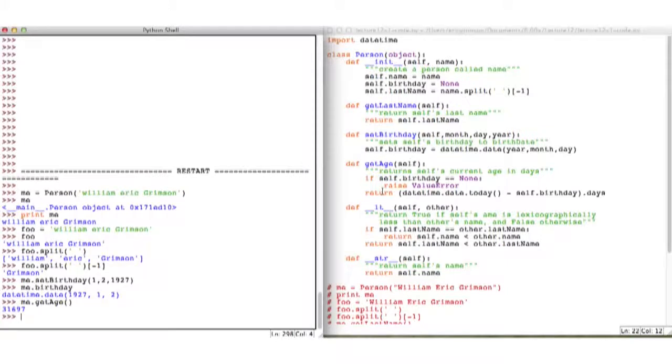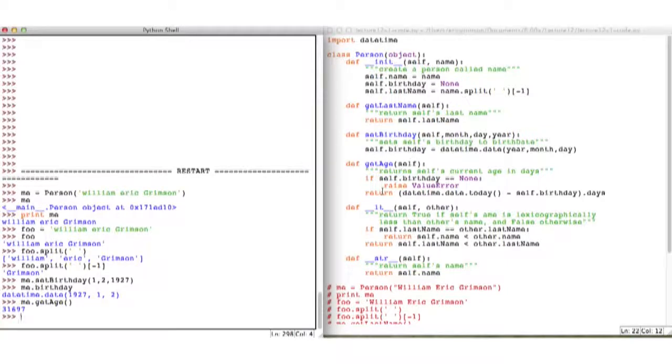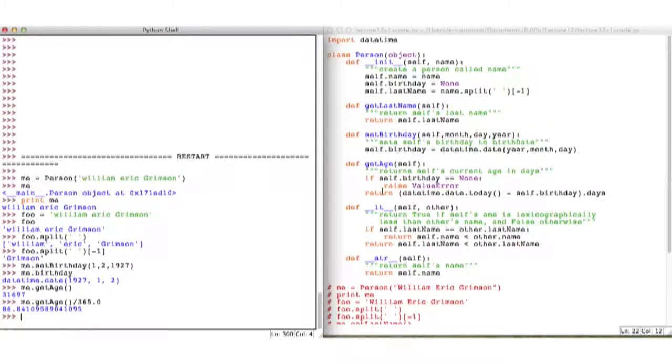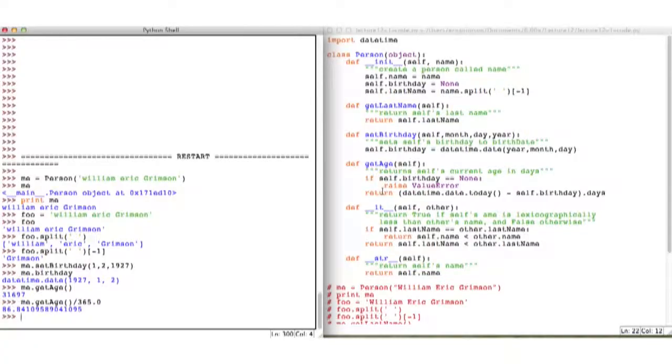And it says I'm this number. Whoa, well, what's that? Remember, that's returning it in days. So if I wanted to see my age, I could divide that by 365. And I see that I'm almost 87 years old. All right, I made up a birthday. I'm not quite that ancient yet.